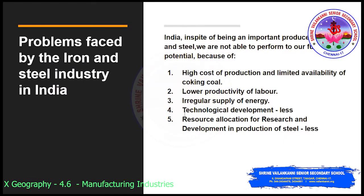India, in spite of being an important producer of iron and steel, is unable to reach its full potential. This is because of high cost of production, limited availability of coking coal, lower productivity of labor, irregular supply of energy, and very limited technological development. Resource allocation for research and development and production of steel is also comparatively less. These are the problems faced by the iron and steel industry.